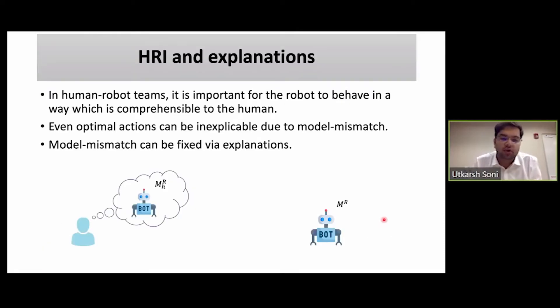In human-robot interaction scenarios, it is very important for the robot to behave in a way which is comprehensible to the human. Even optimal actions can appear to be inexplicable to the human due to a model mismatch between them. By model mismatch, I mean that the robot's model of the task can be different from what the user thinks the robot's model of the task is, and in that way even optimal behavior can appear to be inexplicable. This kind of model mismatch can be fixed if the robot provides some explanation in form of model updates to the user.